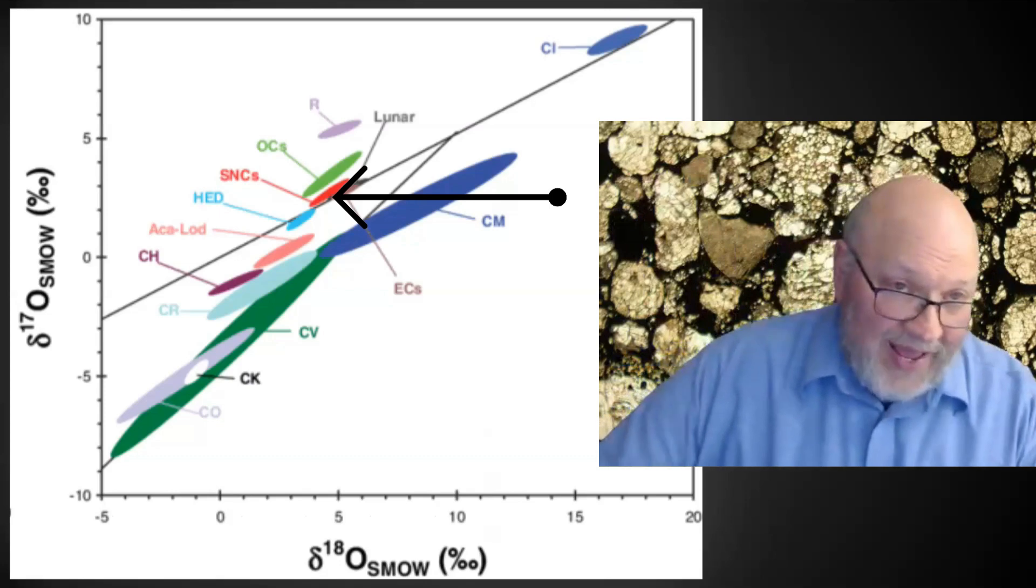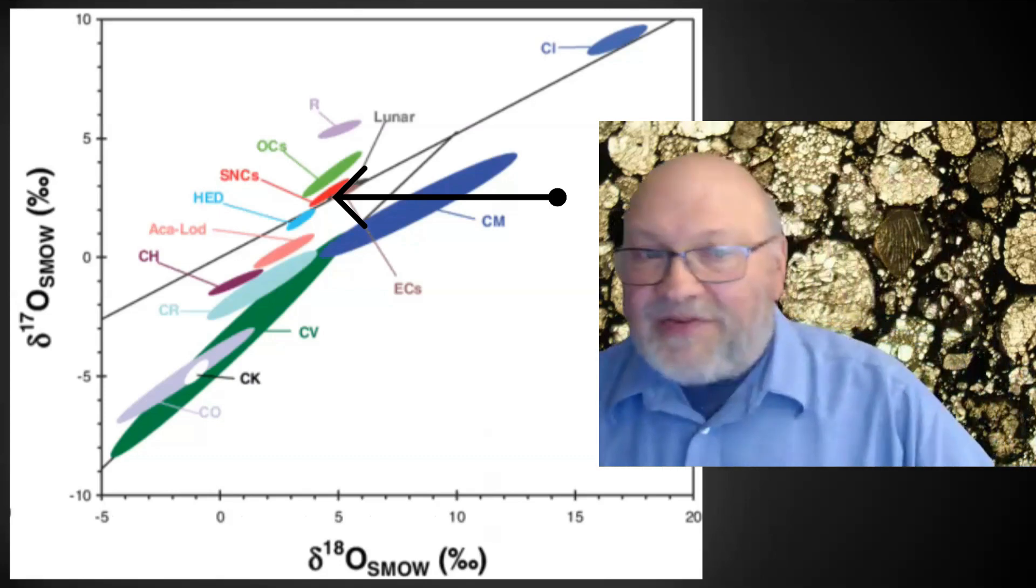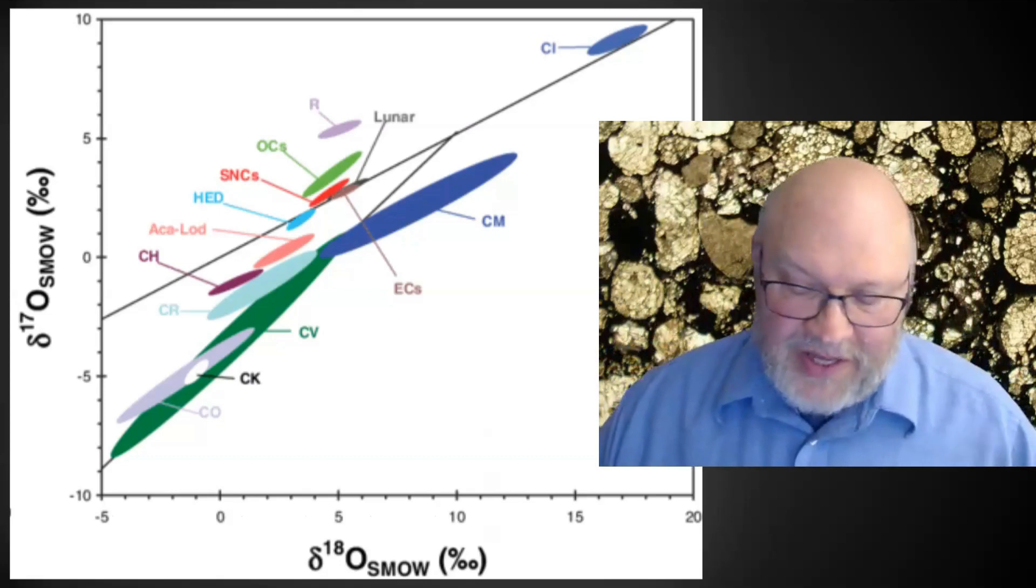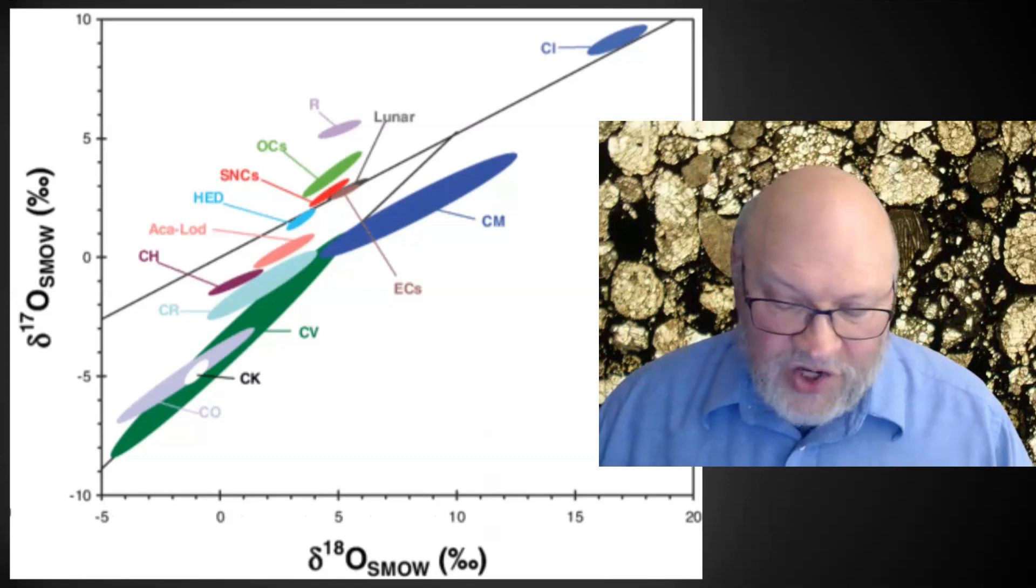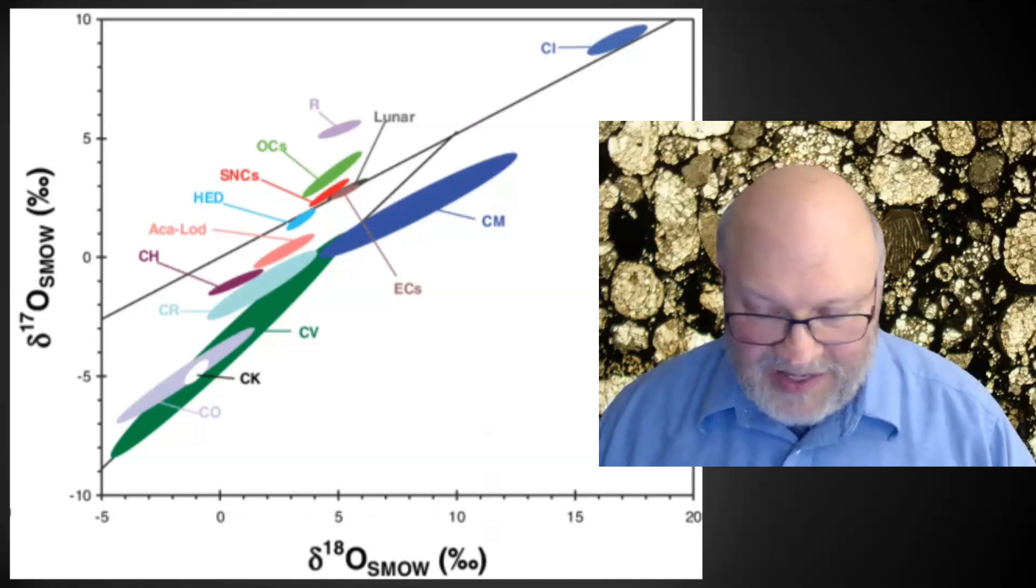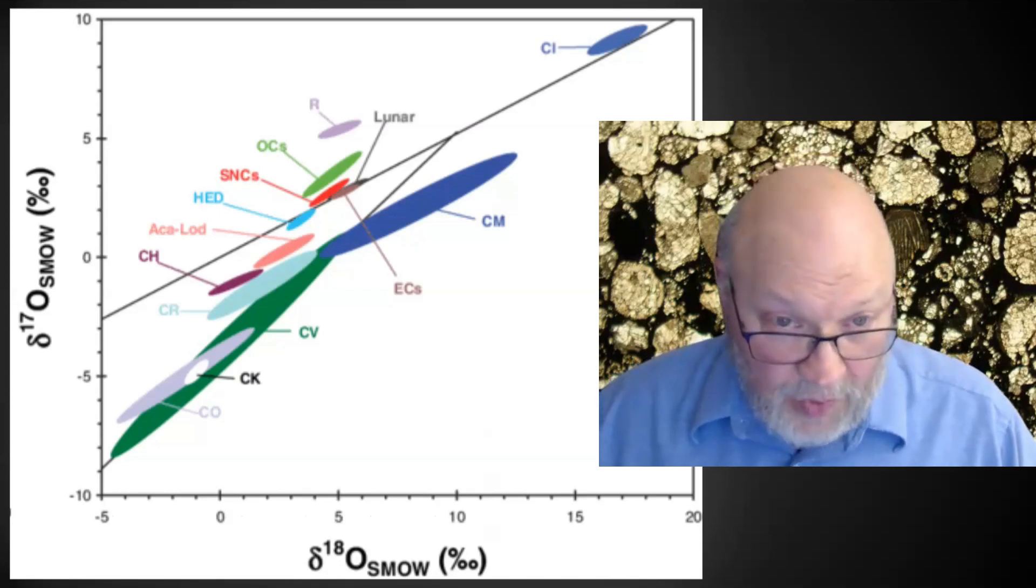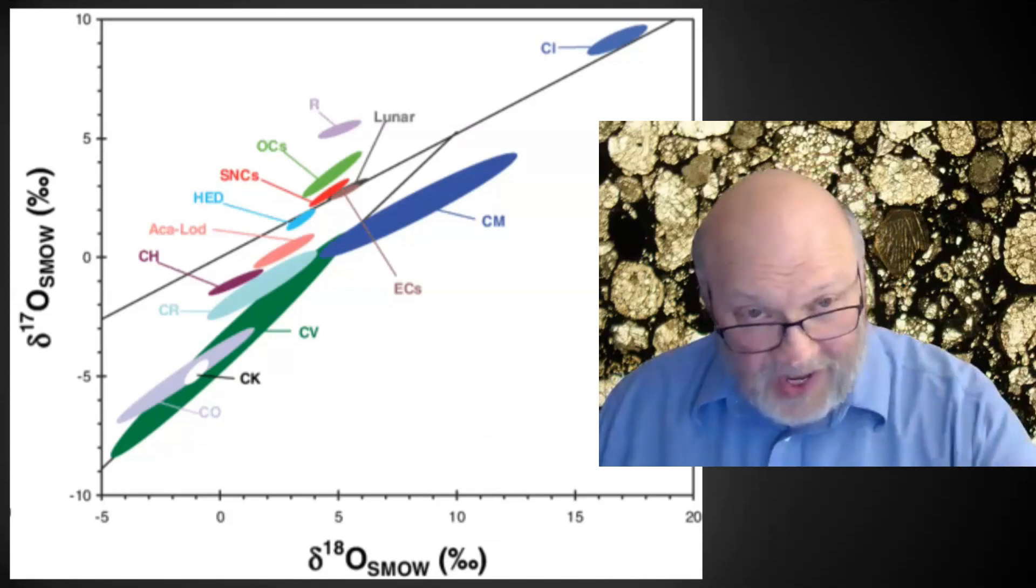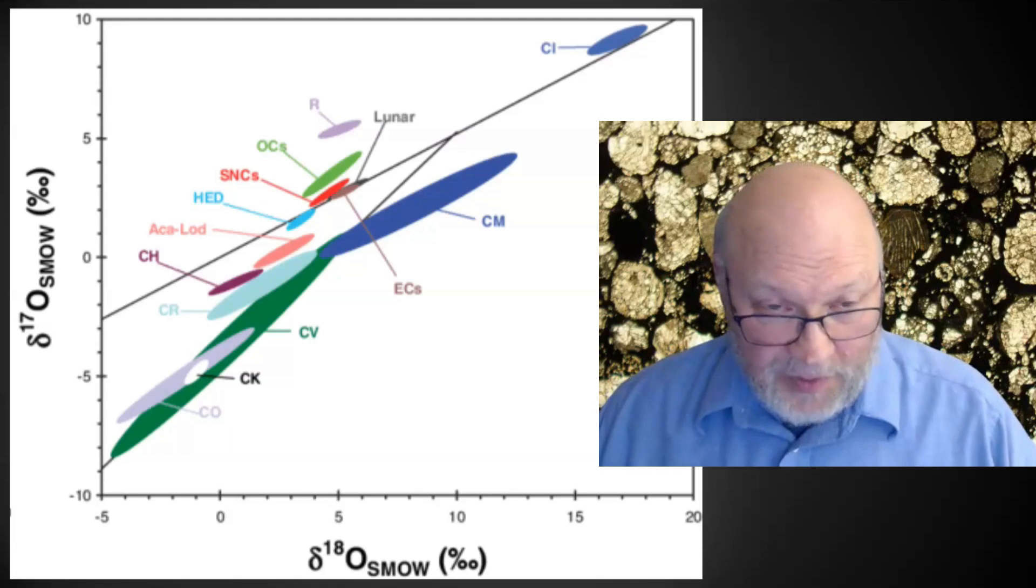Let's look at the two axes. The y-axis over there is delta-17O. Let's think of it essentially as the ratio of O-17 to O-16, and the bottom would be the ratio of O-18 to O-16. And so when you divide it that way, it's called a three-isotope plot for that reason, because everything is normalized to O-16.